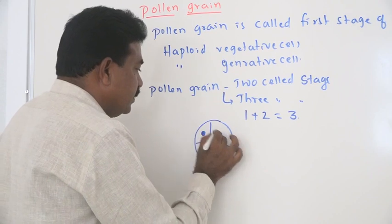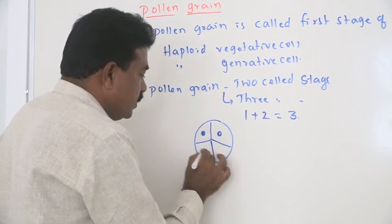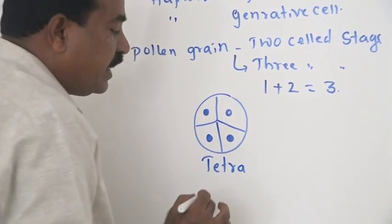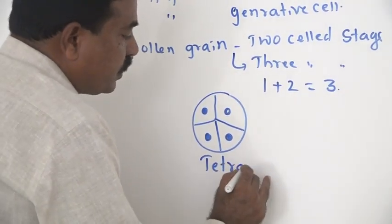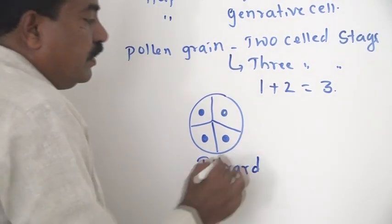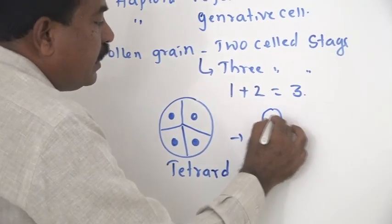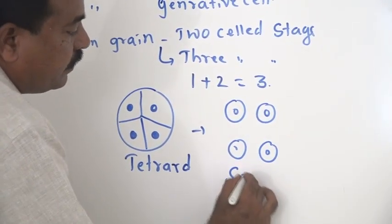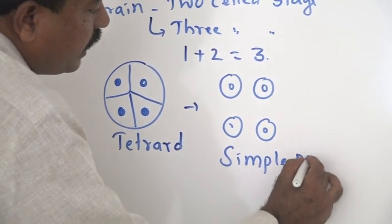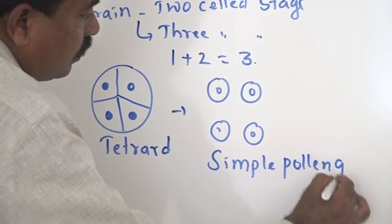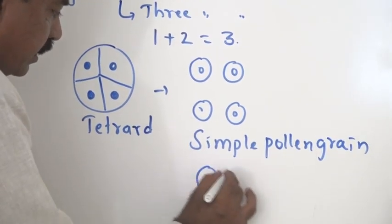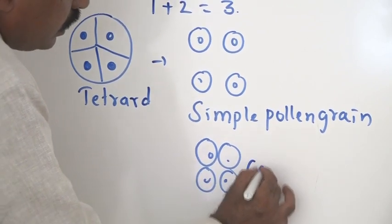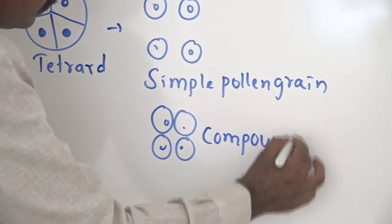When microsporogenesis takes place, these pollen grains are present in a four intact form we call spore tetrads. They may separate singly and form pollen grain. At that time they are called simple pollen grain. If they remain intact, such pollen grains we call compound pollen grains.